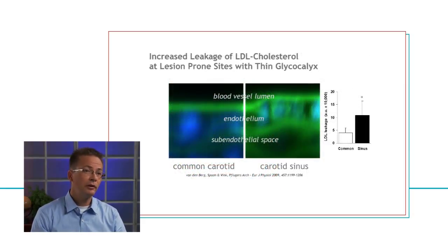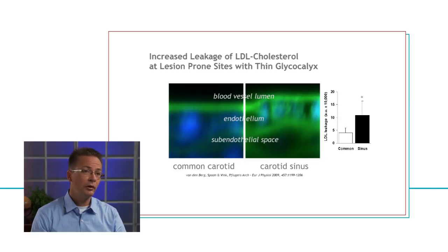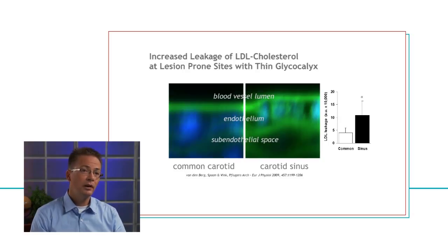Here you see what happens if we infuse cholesterol into the bloodstream. The green dye shown here is high-fat cholesterol injected into the bloodstream. The top of the image shows the lumen where blood flows and the bluish dots are the vessel wall. On the left hand side you see a vessel wall with thick glycocalyx that protects against leakage of the green dye — the cholesterol is confined to the luminal side and doesn't leak into the vessel wall. On the right hand side, at a site with thin glycocalyx, already within 15 minutes after injection a lot of the cholesterol leaks across the endothelial cells and starts accumulating in the vessel wall. This is the first step in activating the inflammatory response that causes vessel wall disease and atherosclerosis.